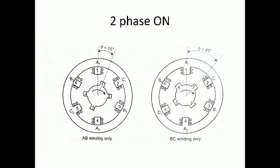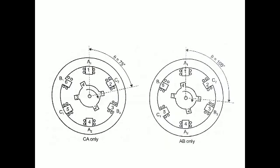The second operating mode is two-phase on. Here I activate two groups of windings simultaneously: A and B, then B and C, then C and A, by repetition. For the first step, activating A and B — the rotor finds the intermediate position between A and B. For the second, activating B and C — the rotor finds the intermediate position between B and C, which is 45 degrees. The first is 15 degrees.